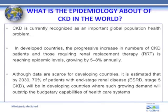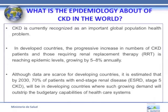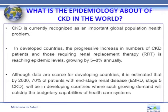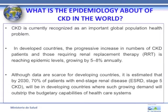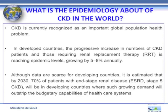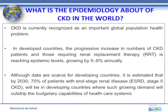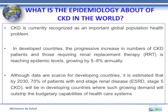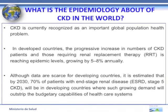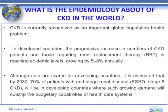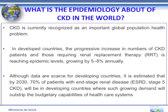What is the epidemiology of CKD in the world? CKD is currently recognized as an important global population health problem. In developed countries, the progressive increase in number of CKD patients requiring renal replacement therapy is reaching epidemic levels, growing by 5 to 8% annually. Although data are scarce for developing countries, it is estimated that by 2030, 70% of patients with end-stage renal disease will be in developing countries, where such growing demand will outstrip the budgetary capabilities of healthcare systems.